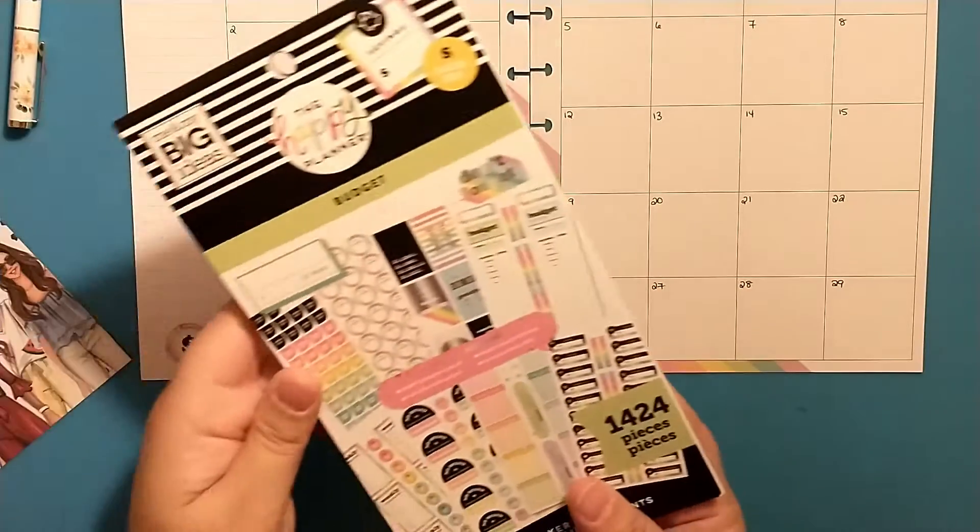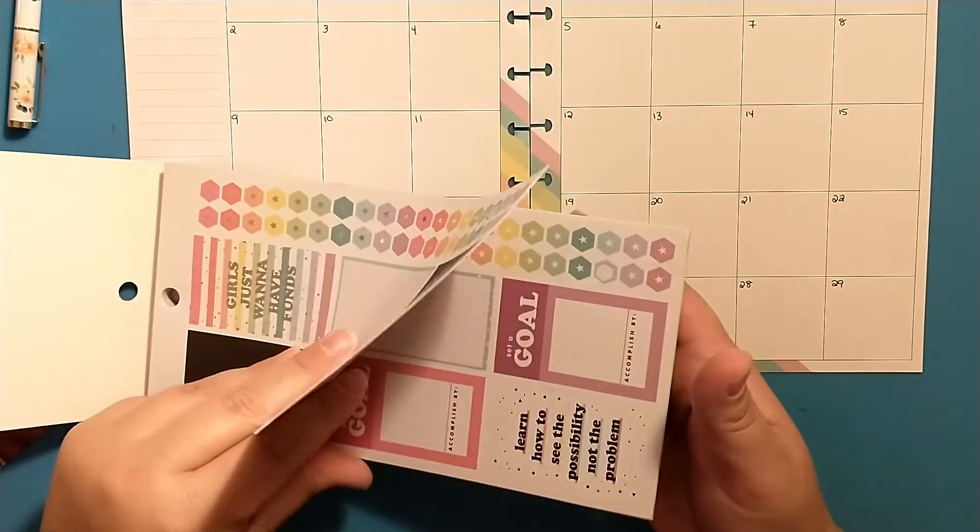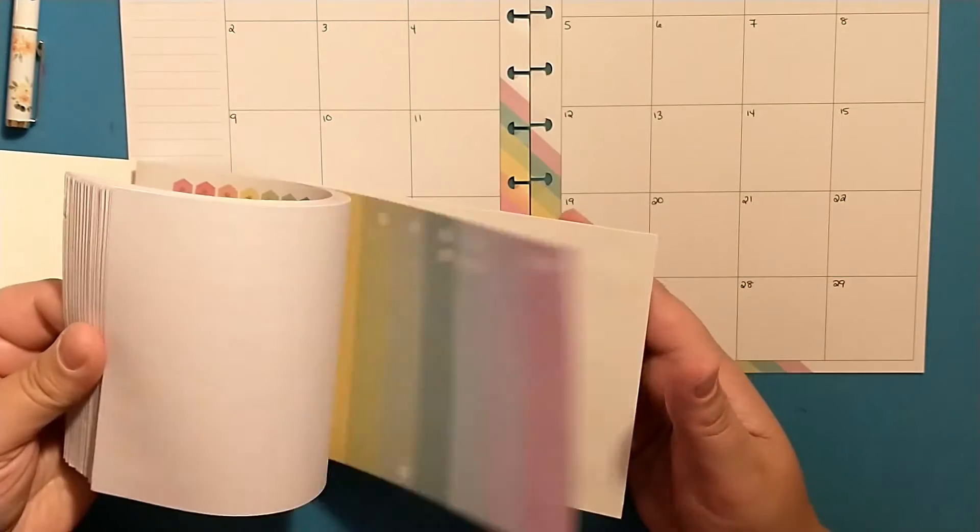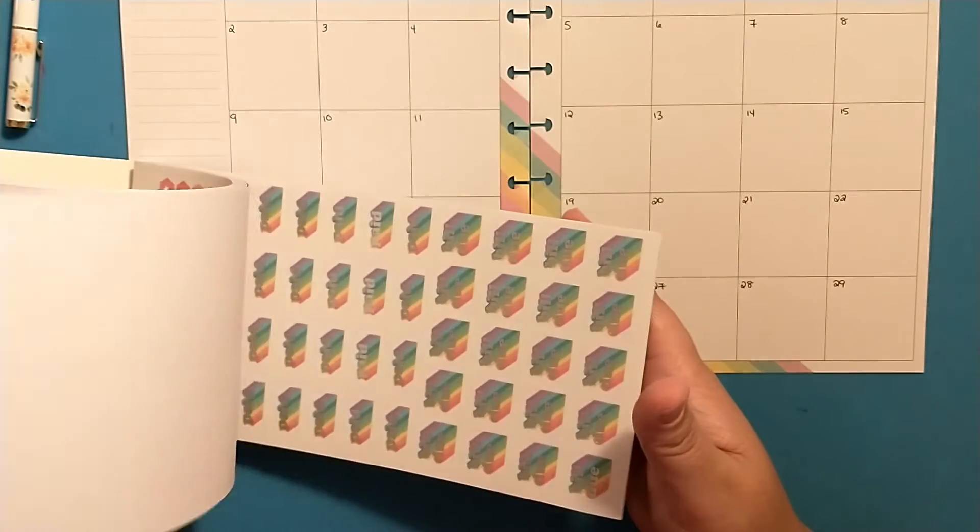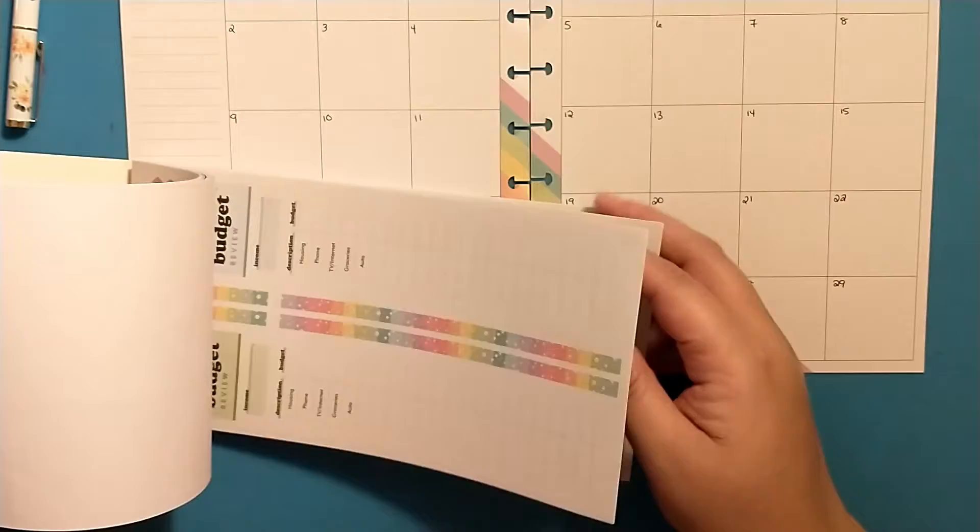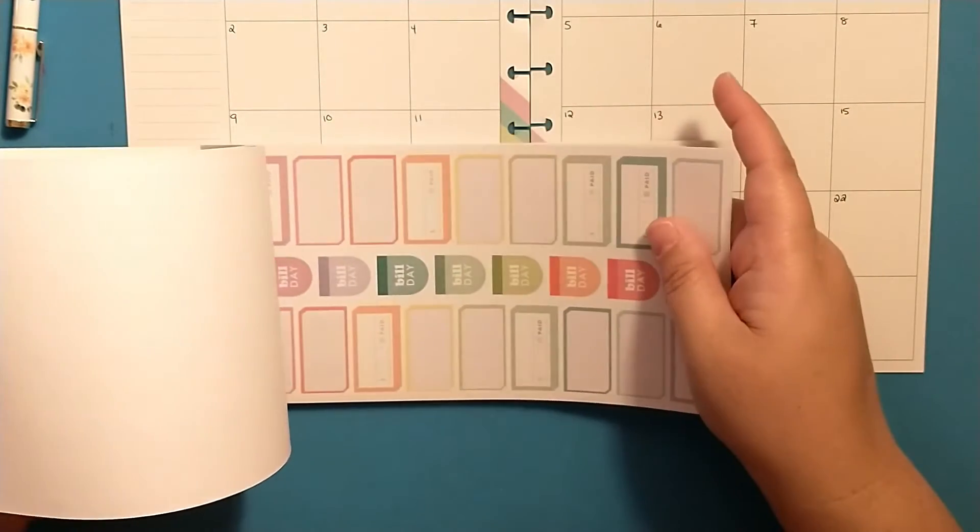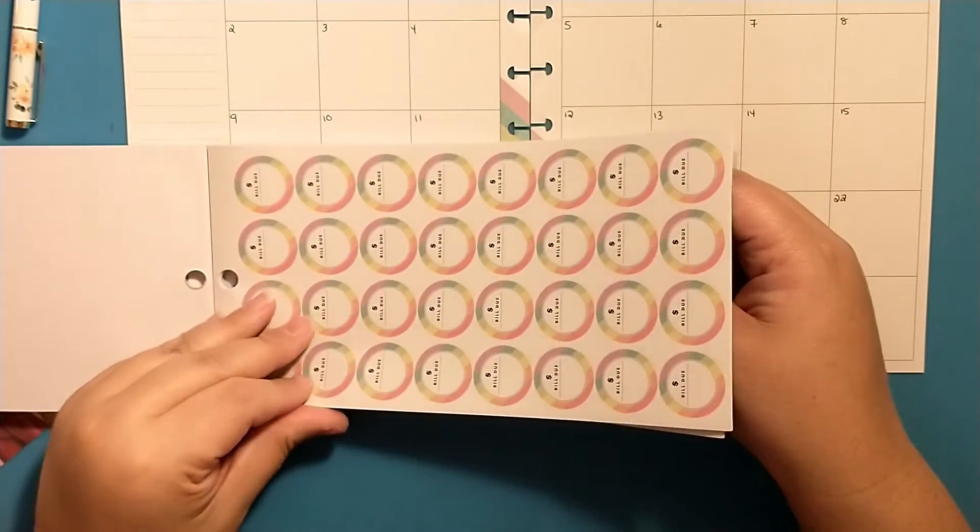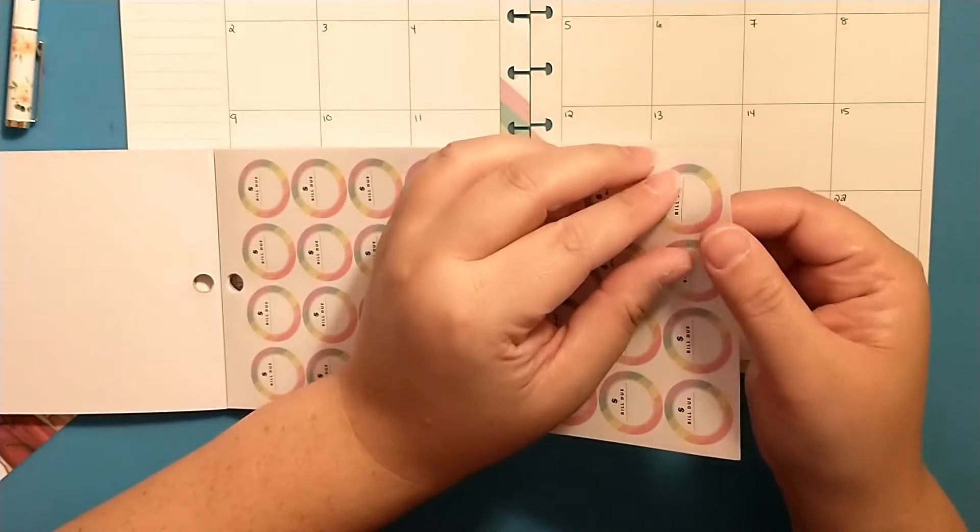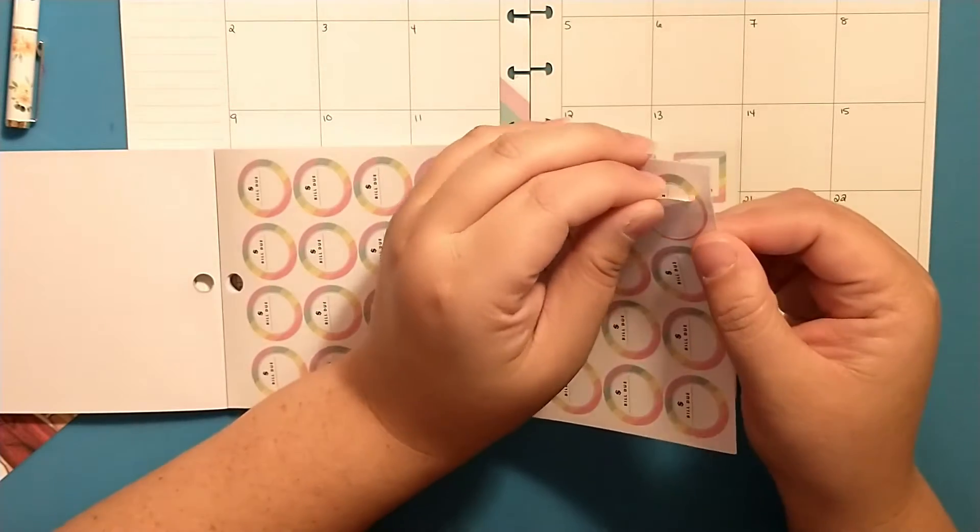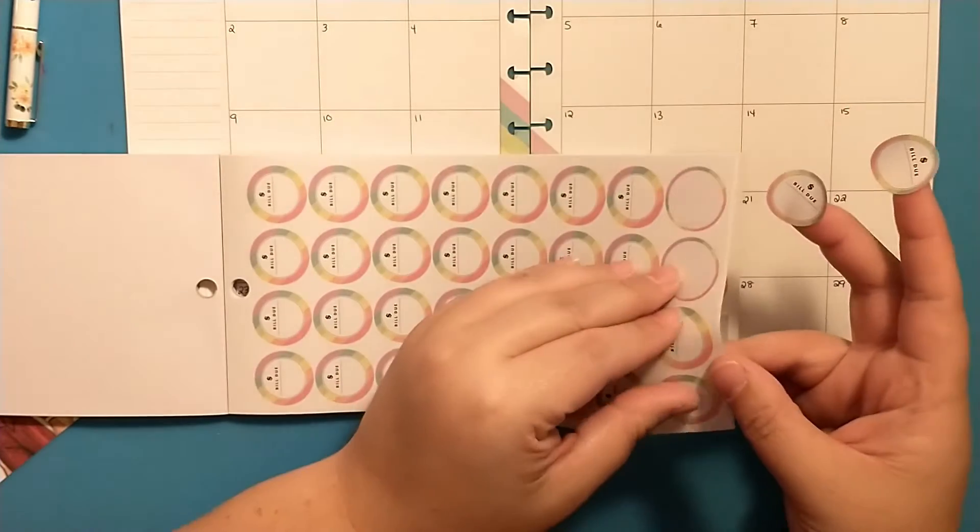And then I'm going to use this budget sticker book here for putting down my bills. This sticker book has some really good stickers in it. I haven't done these, let's do these round ones. Let me grab a couple of these off.